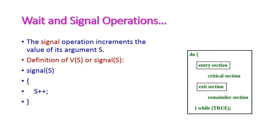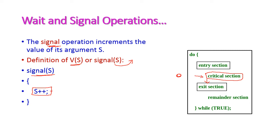The next operation is the signal operation, which is V. It will give a signal to indicate that the current process has completed its critical section execution. For that purpose we use the signal operation. After completing the critical section, the control enters the exit section. In the exit section, the signal operation increments the S value by 1. So previously it was 0 or a negative value; after executing the critical section, the current process will increment the S value by 1.